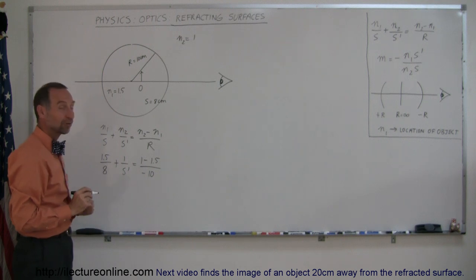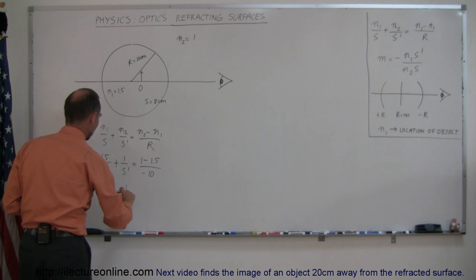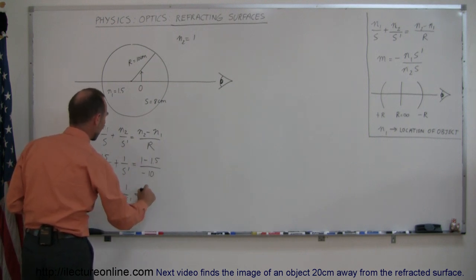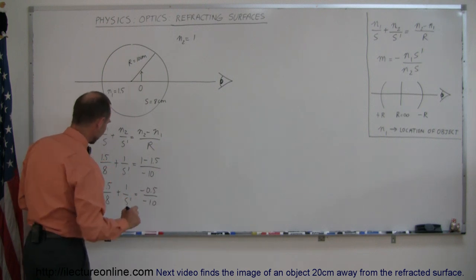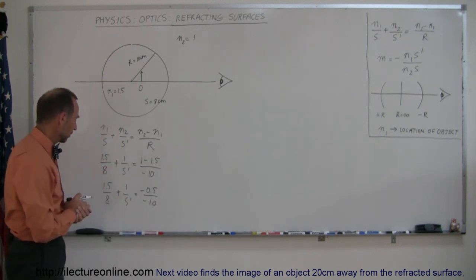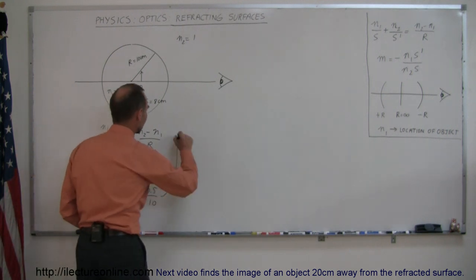We need to find out what s prime is, so let's simplify this. We have 1.5 over 8 plus 1 over s prime is equal to 1 minus 1.5 over a minus 10. Simplifying this a little bit more, we can bring this over to the other side, get rid of the negative signs here.